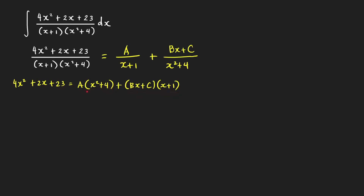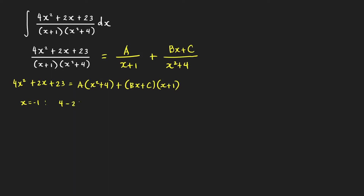Since we cannot make the quadratic factor equal to 0, we look at the linear factor. This product is equal to 0 when x = −1. Plugging in x = −1 gives 4 − 2 + 23 = A(1 + 4), so 25 = 5A, which gives A = 5.